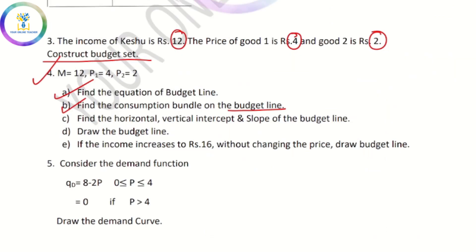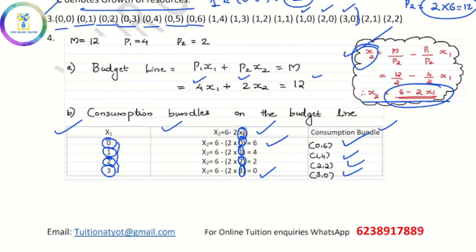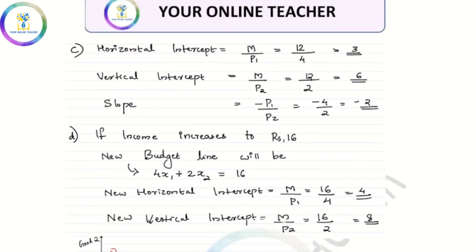We will get the horizontal and vertical intercepts. The horizontal intercept is m by p1, so 12 by 4 is 3. The vertical intercept is m by p2, so 12 by 2 is 6. The slope is minus p1 by p2, so minus 4 by 2 equals minus 2.